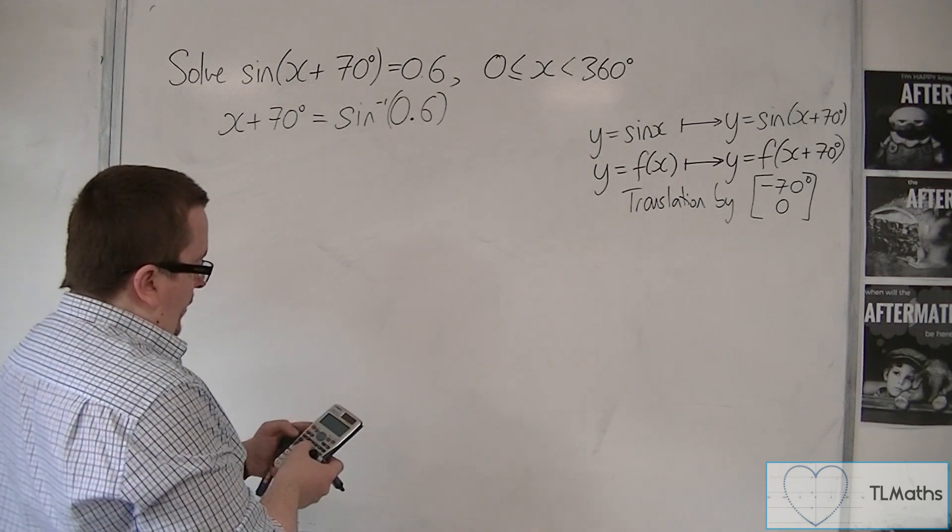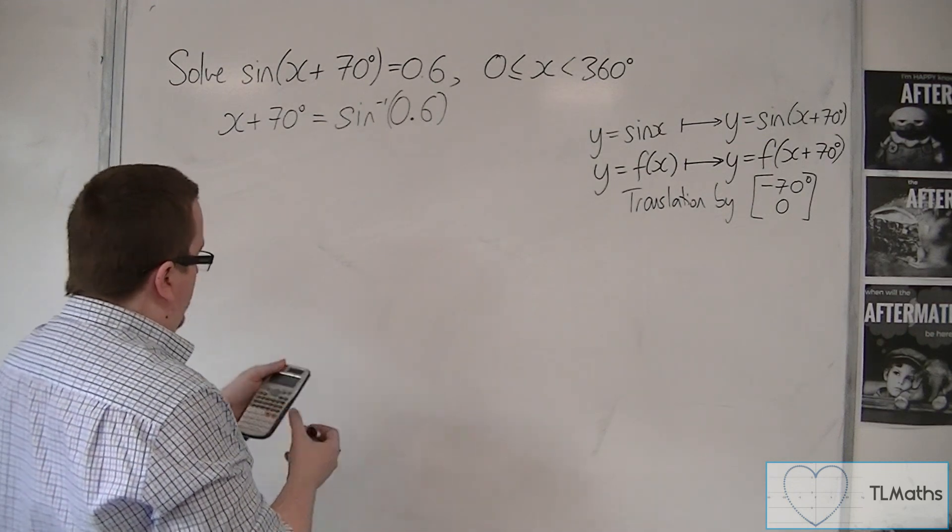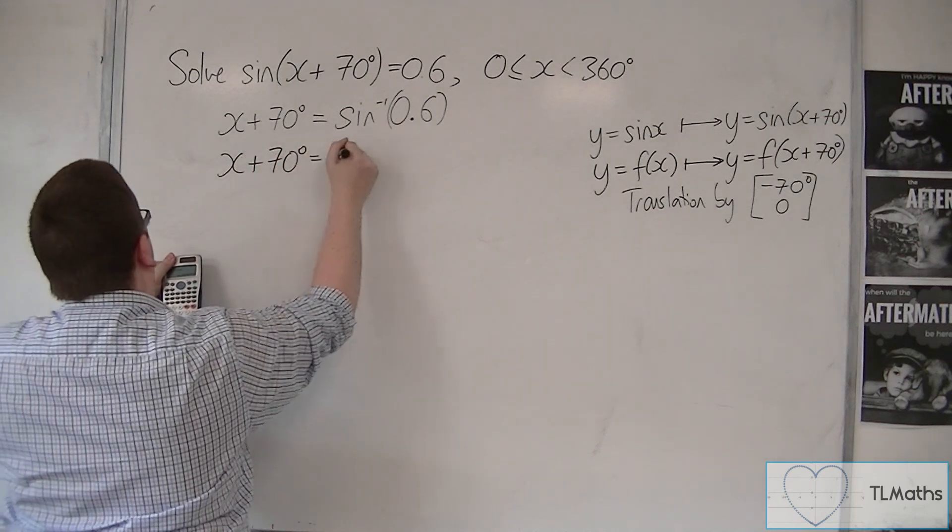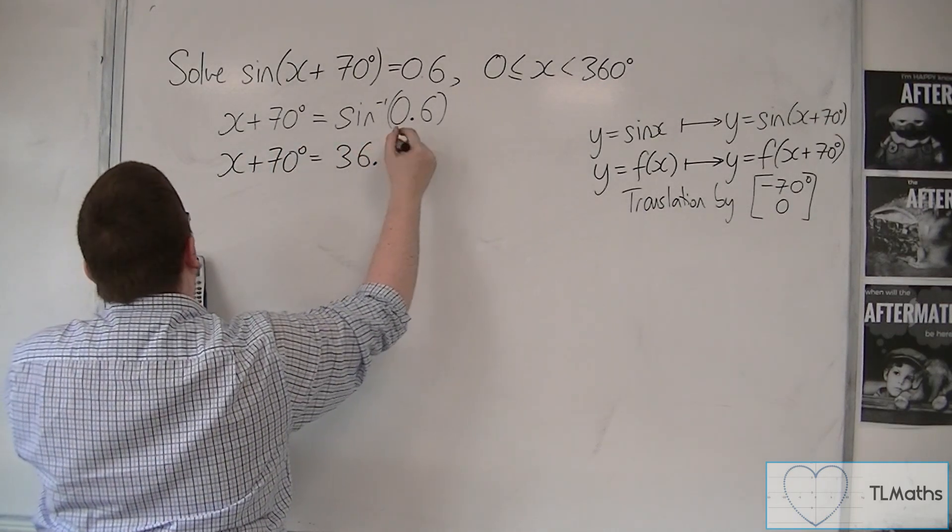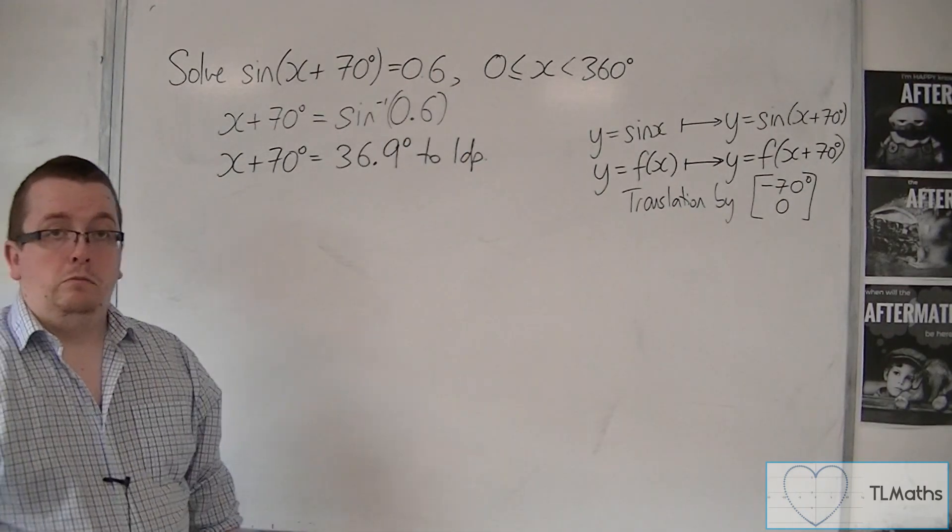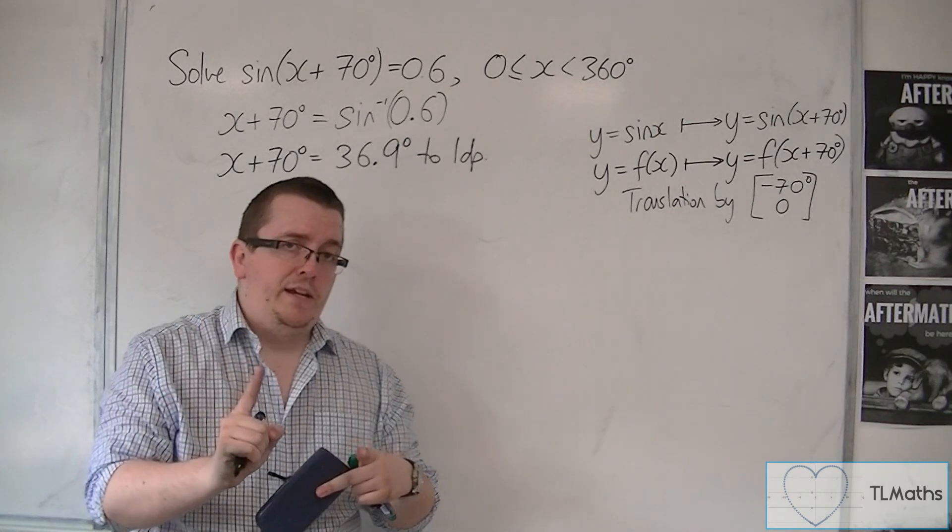So, inverse sine of 0.6 is what I do first, and I get x plus 70 is 36.9 degrees to one decimal place. So, at this stage, I then sketch the curve.